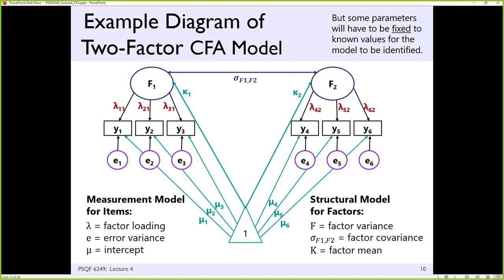Student: What does factor variance mean? Instructor: The variability across people in what the F's would be. F is a random variable — it doesn't have a scale yet because it's imaginary. But we believe each person has a different F, so F has a distribution. All we need to know to make this work mathematically is what is the mean of F supposed to be and what is its variance. If we have more than one F, we also have a covariance between them. Note the two-headed arrow for that line — two-headed arrows mean bidirectional, direction-agnostic relationships known as covariances.